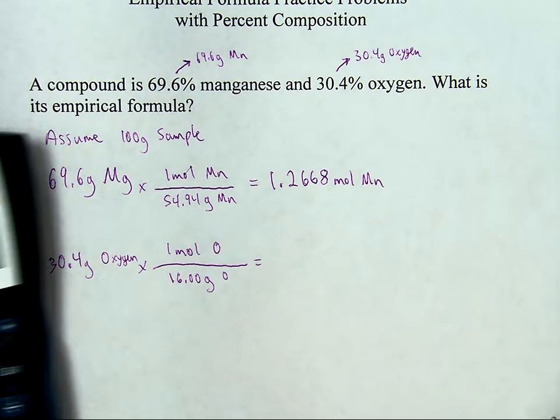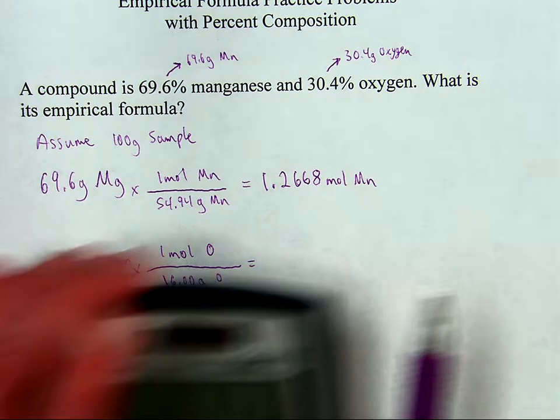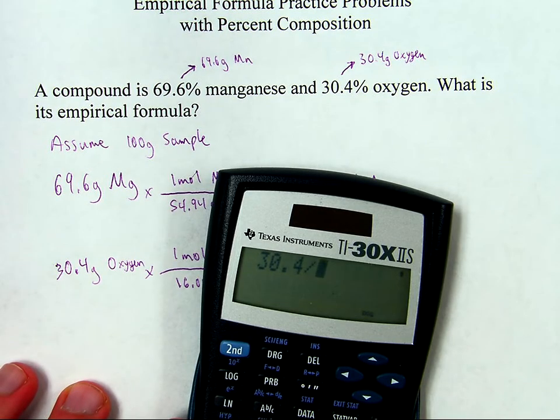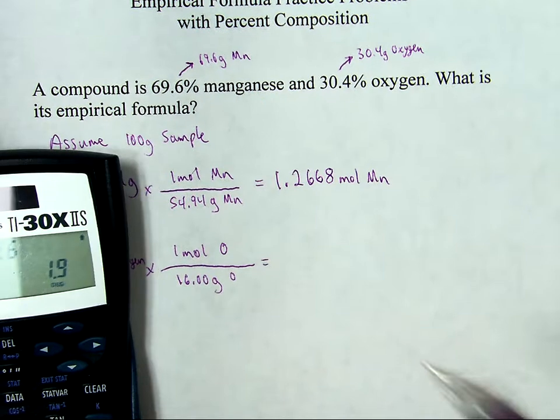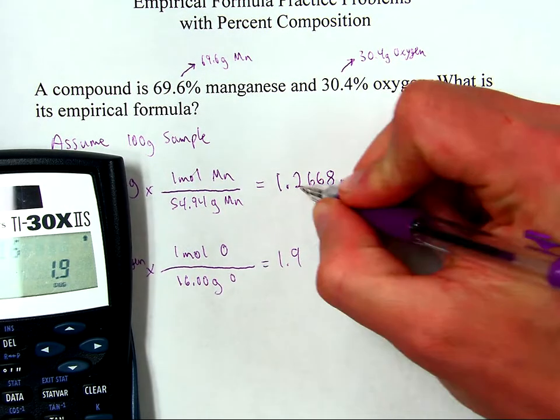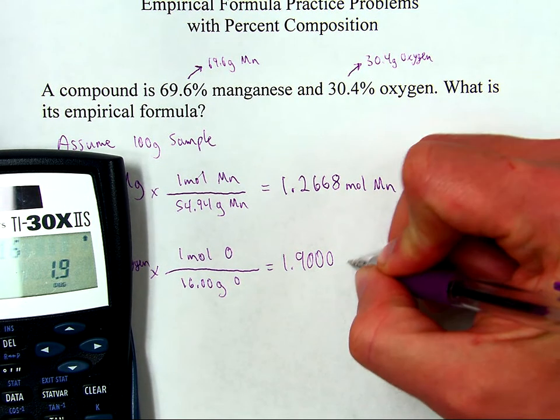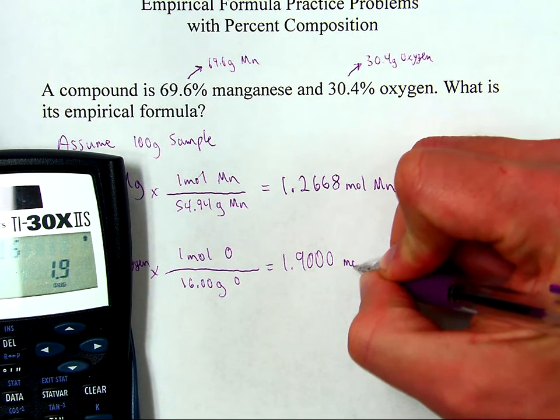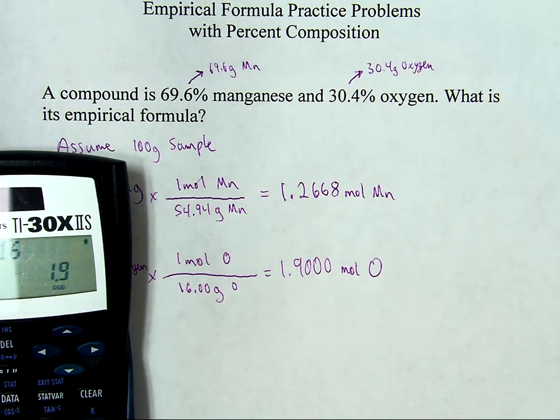Let's see, converting that grams to moles of oxygen. So let's see. Okay, so 1.9, well, I guess take about the number of decimal places. So that's moles of oxygen.